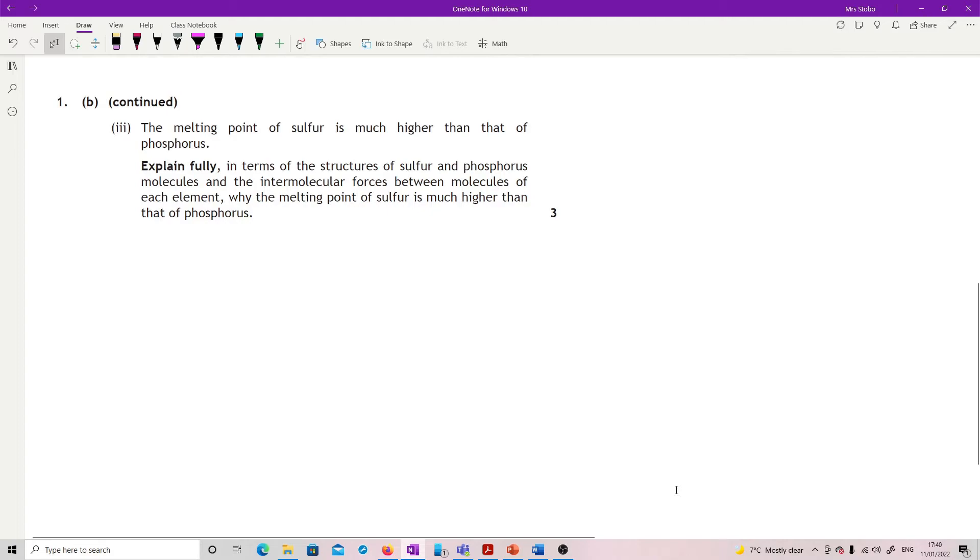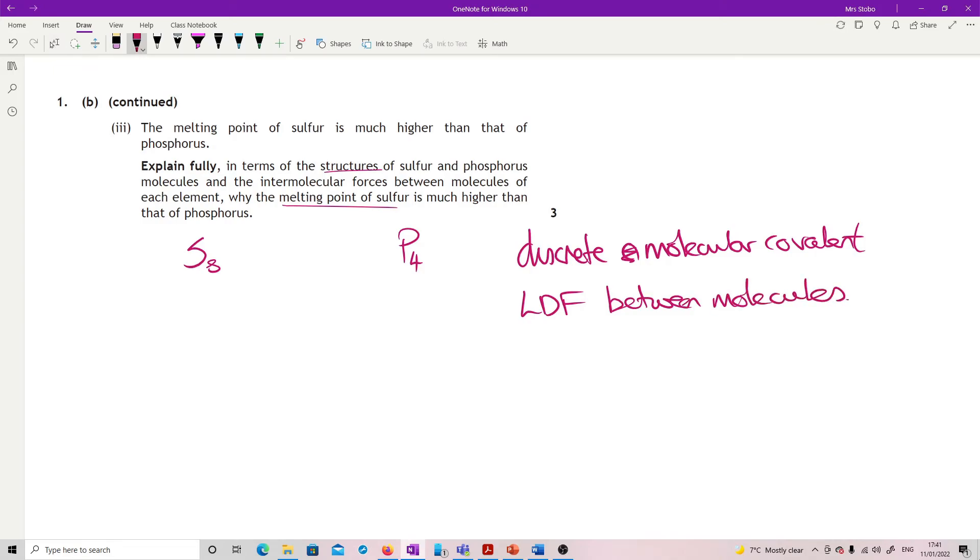Melting point of sulfur is much higher than that of phosphorus. Explain fully in terms of the structures of sulfur and phosphorus molecules and intermolecular forces. What you should know is that sulfur is S8 and phosphorus is P4, so here we have the structures. They are both discrete molecular. If you want to melt these, what you have to melt apart is the London dispersion forces between molecules. Why is this one so much higher than the phosphorus?